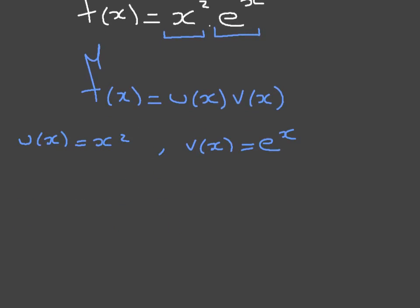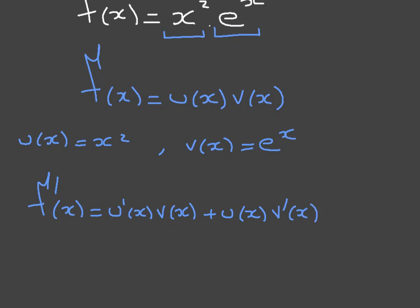Remembering the product rule we just saw, the derivative in this case would be f'(x) = u'(x) · v(x) + u(x) · v'(x). Since u(x) = x² and v(x) = eˣ, we can determine that u'(x) = 2x, and v'(x) = eˣ. Remember, when we differentiate eˣ, the result is just eˣ.